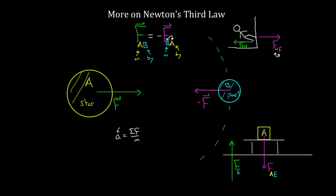This might seem ridiculous — if you jump up, you move around, but the Earth just sits there. If the forces are equal, how come the Earth doesn't move like you do? Again, it's because equal forces don't mean equal accelerations. The mass of the Earth is so large that there's basically no measurable acceleration, even though the forces on you and the forces on the Earth are the same. These two forces are third law partner forces joined forever — equal no matter what, whether the box is accelerating, at rest, hitting a wall, sitting on a table, or falling through space.